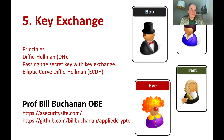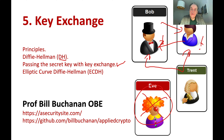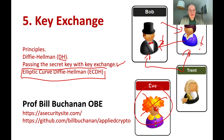Then we'll look at key exchange, and especially how Bob and Alice can obtain the same encryption key without Eve finding out. We'll look at the Diffie-Hellman method, which was created to allow Bob and Alice to openly communicate but end up with the same shared encryption key that Eve cannot determine. We can also use public key to pass the secret key if we want. Finally, we'll look at the most used method — elliptic curve Diffie-Hellman — which is based on the Diffie-Hellman method but uses elliptic curve cryptography.